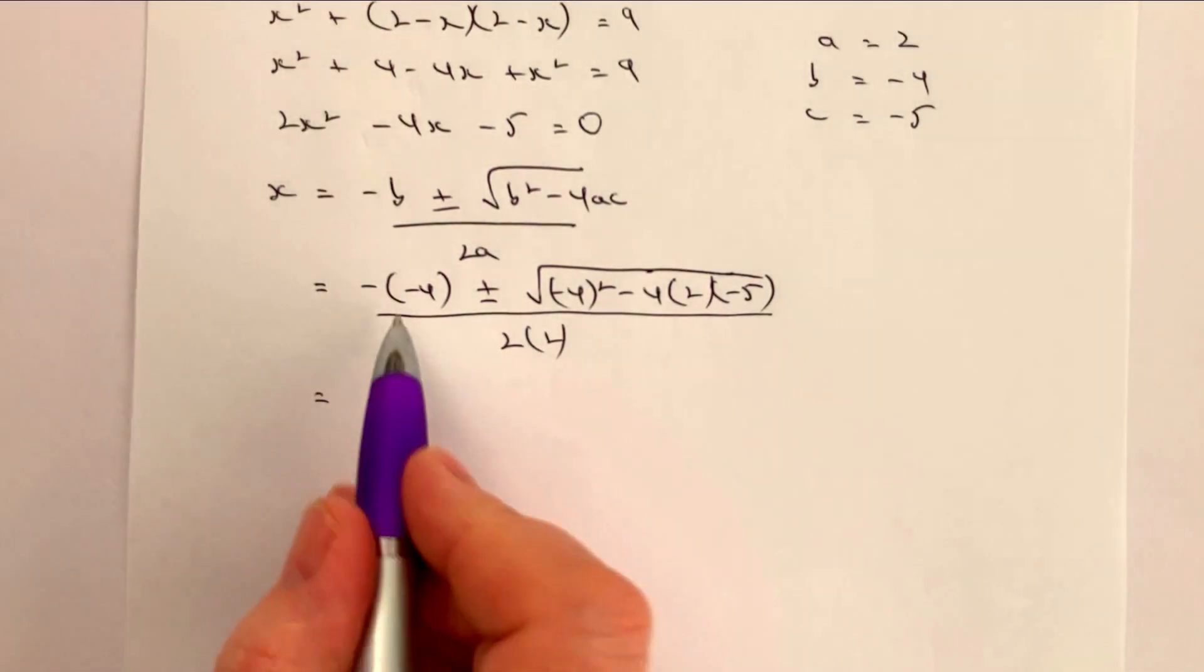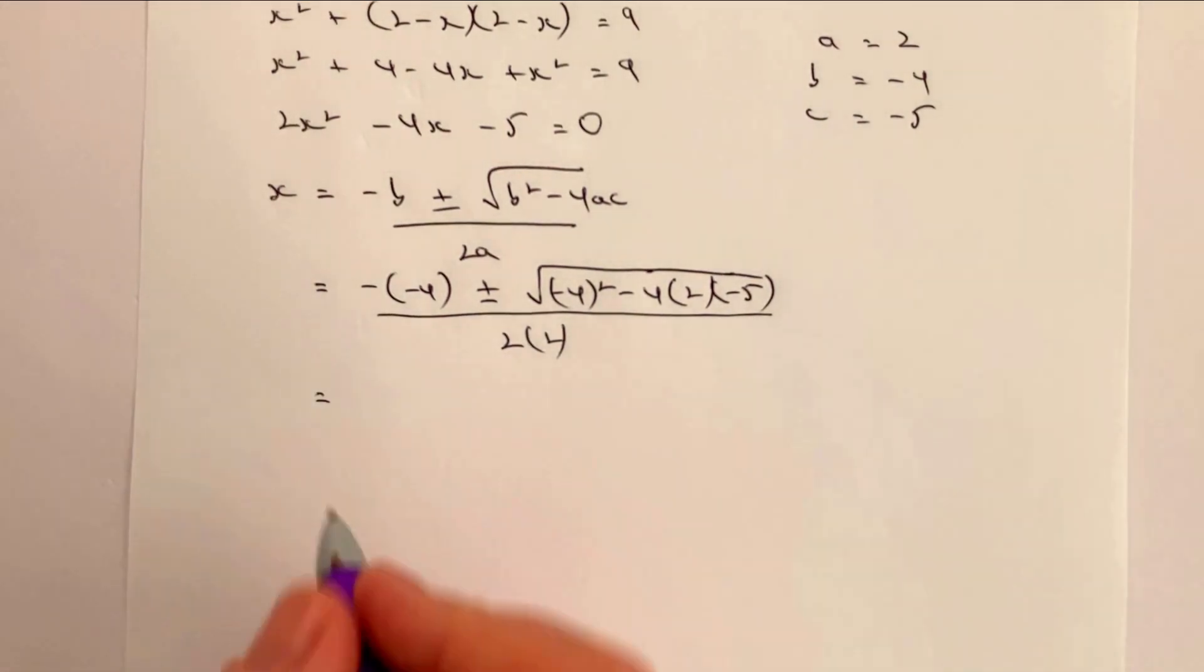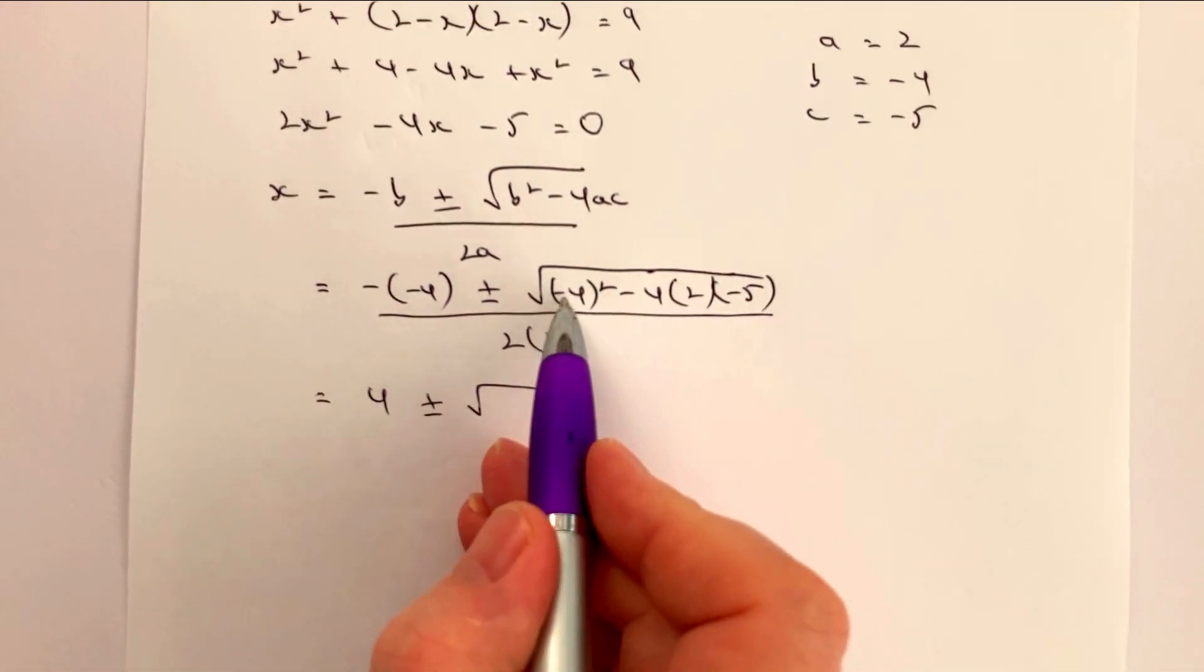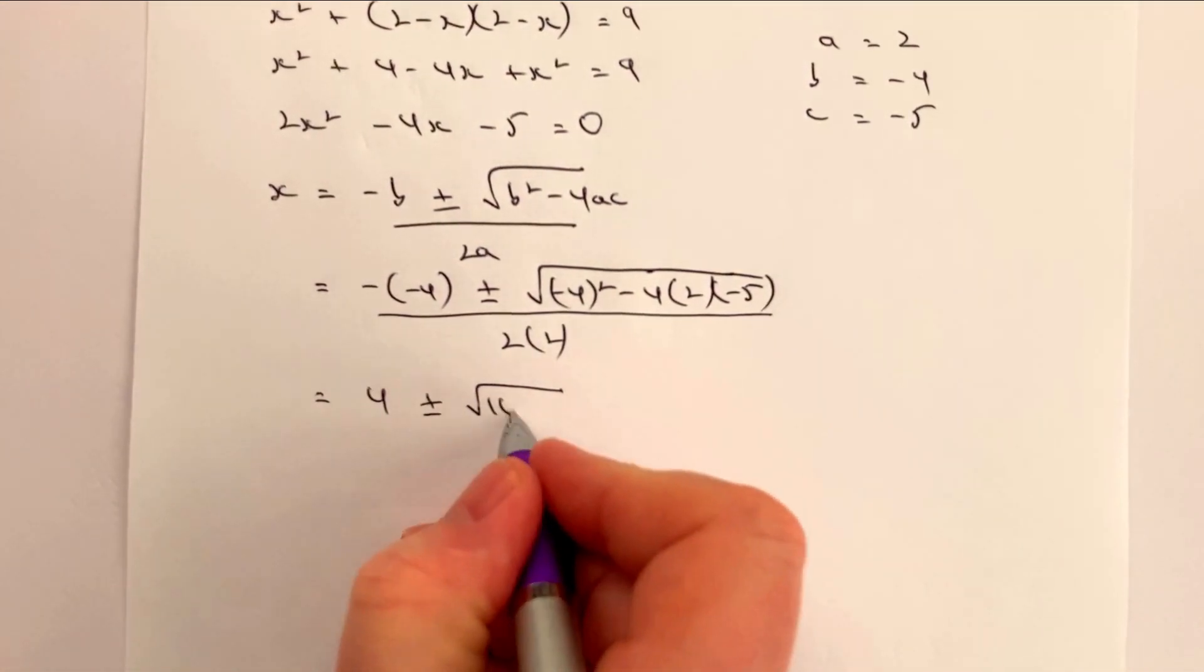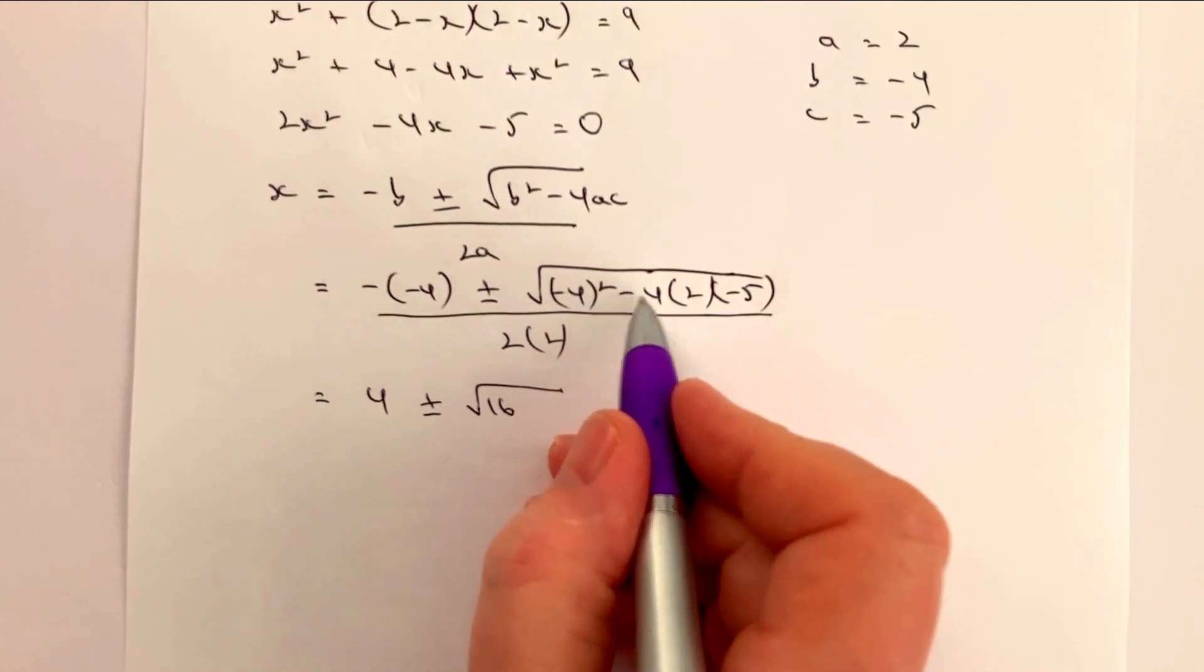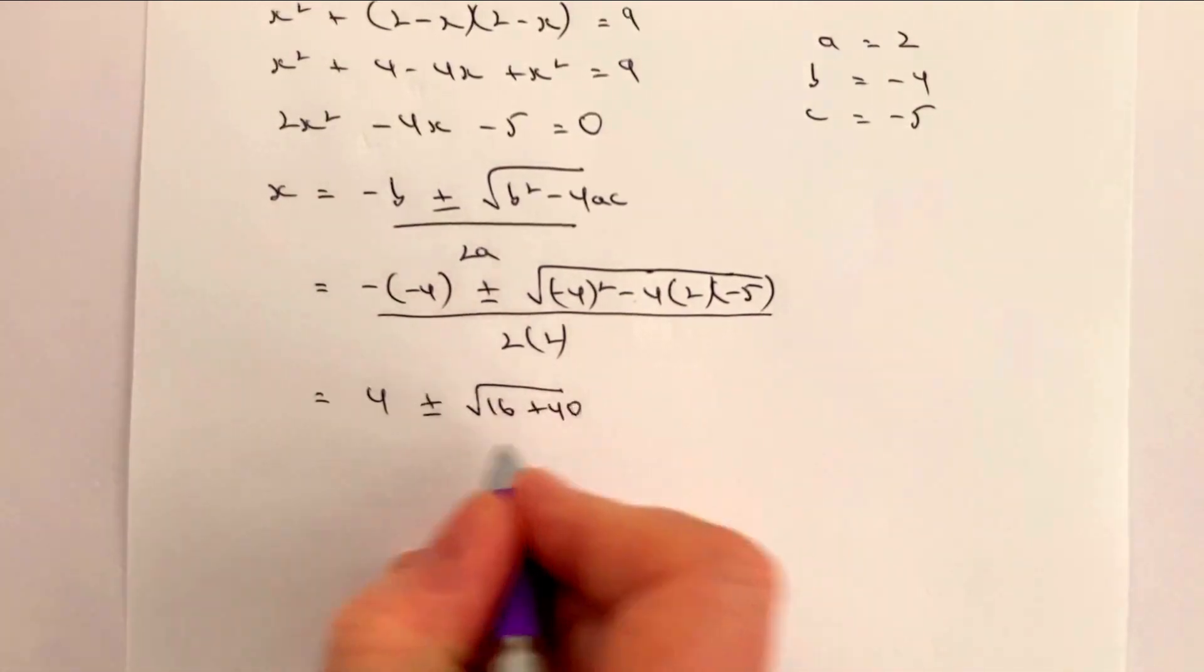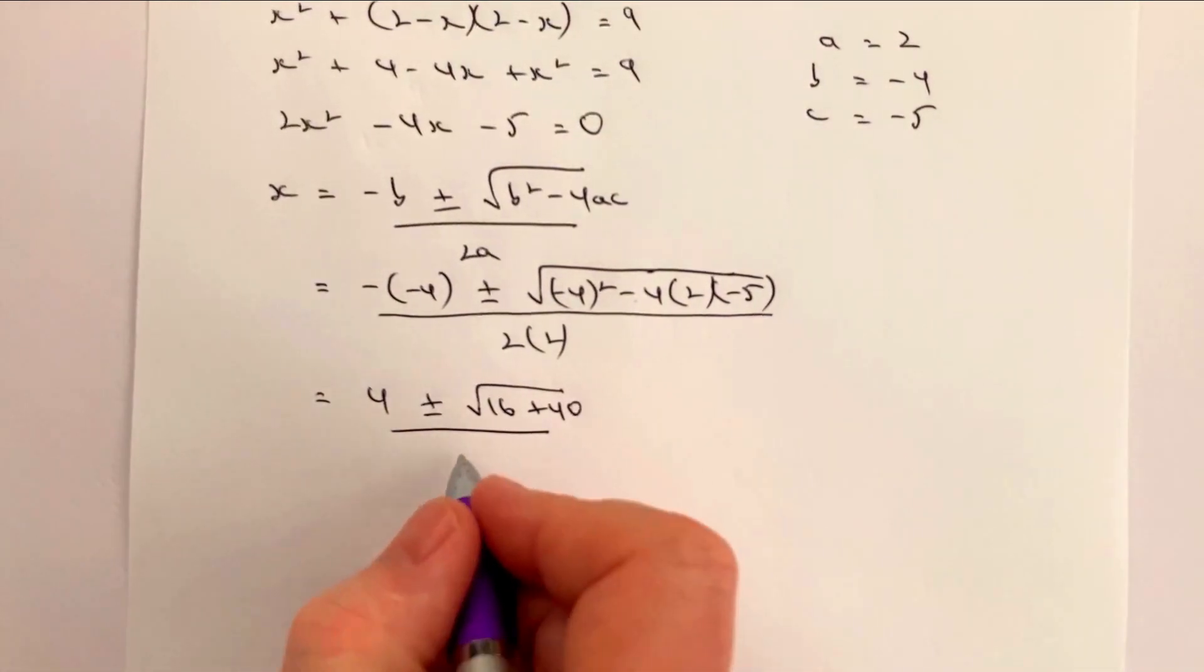Okay, so what we've now got is minus and minus is going to be a positive, so 4 plus or minus the square root. Now this is minus 4 squared which is 16, and then we've got minus 4 times 2 is minus 8, and minus 8 times minus 5 is going to be positive 40, and that's divided by 4.